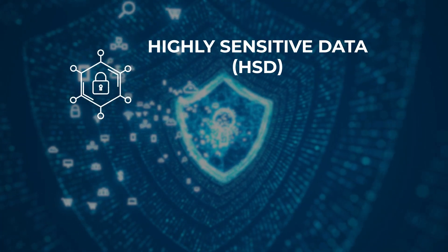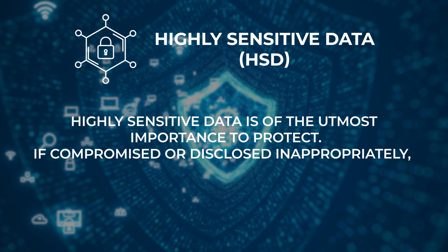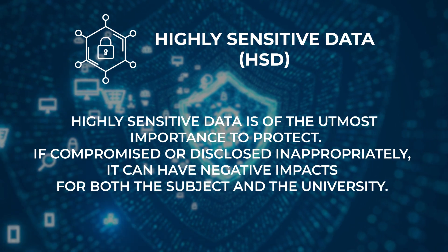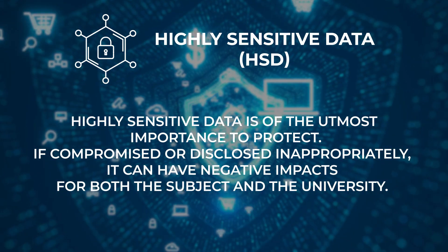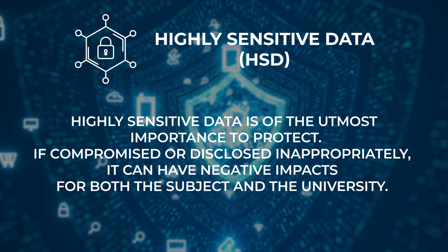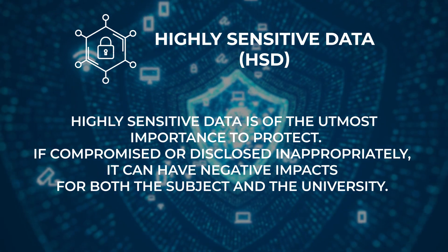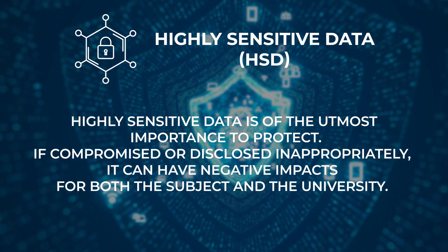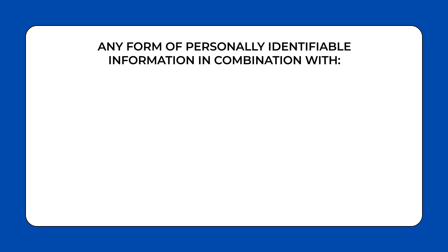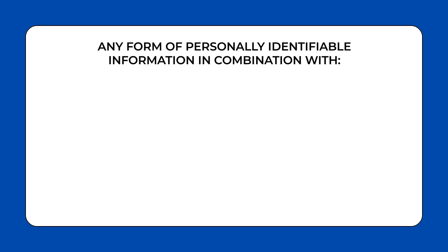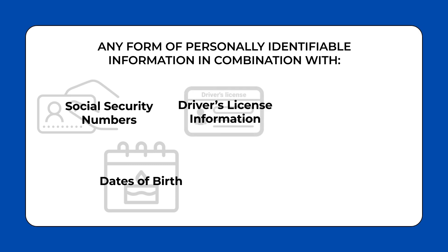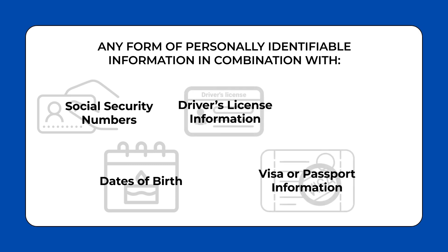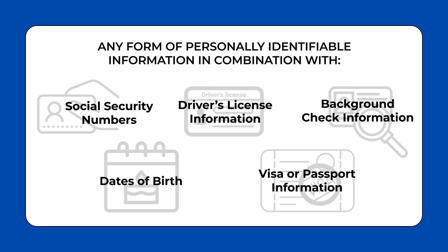Highly sensitive data is of the utmost importance to protect. If compromised or disclosed inappropriately, it can have financial, reputational, privacy, compliance, and other similar impacts both for the subject and the university. Examples of HSD include social security numbers, dates of birth, driver's license information, visa or passport information, and background check information.